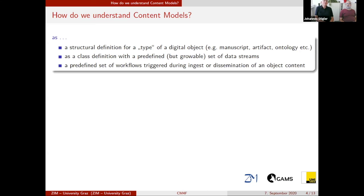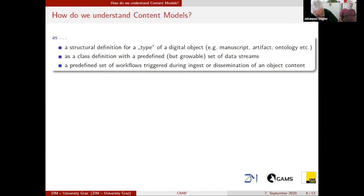What do content models mean? Content models are a structural definition for a type of digital object. For example, in our repository we store manuscripts or we store complex compound objects in an image collection that describe artifacts stored in the repository.